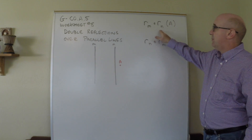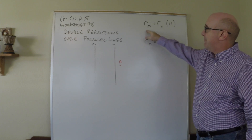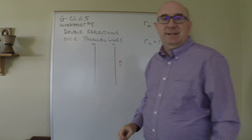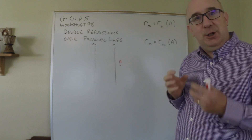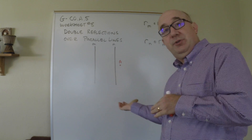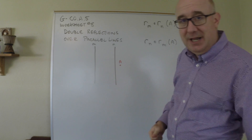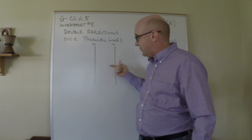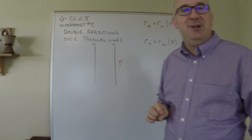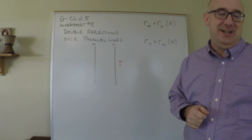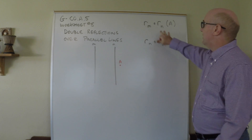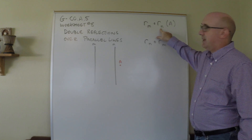It might look something like this: reflect over n and then over m. One misconception students have is that the location of point a determines whether it goes to the right or to the left. Some students say 'a is here so it goes that way,' but you'll see that a will move depending on the order that you do things — so keep an eye on that.